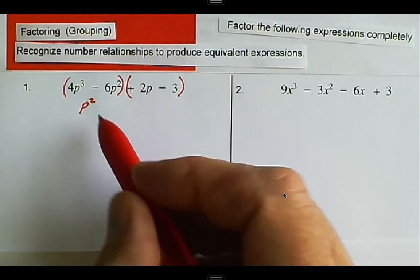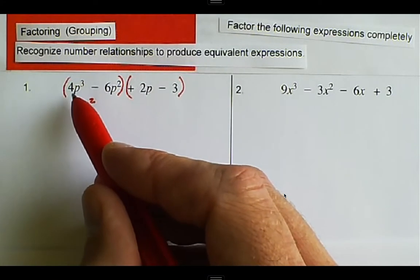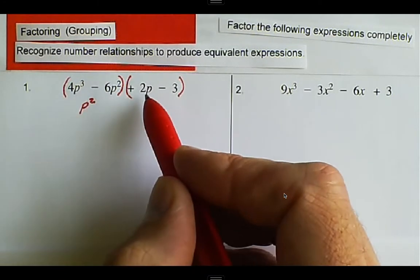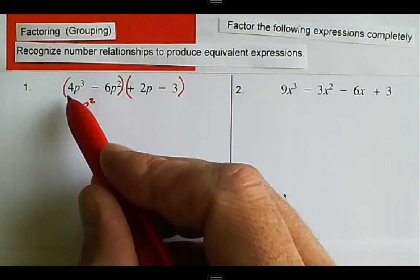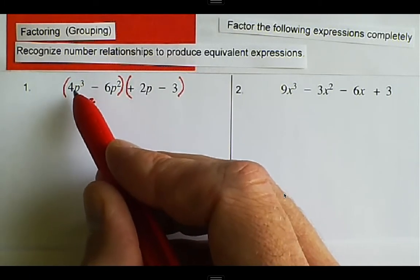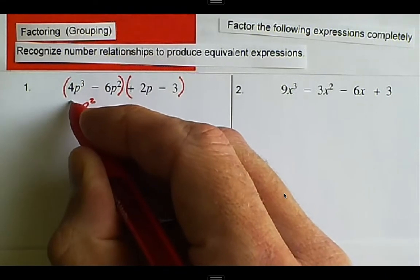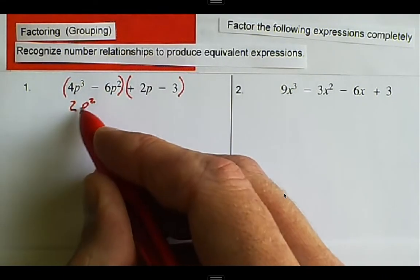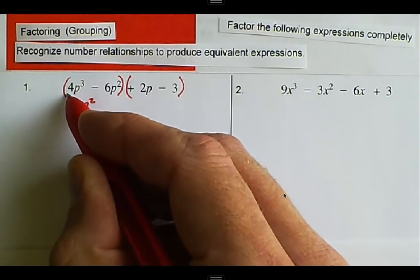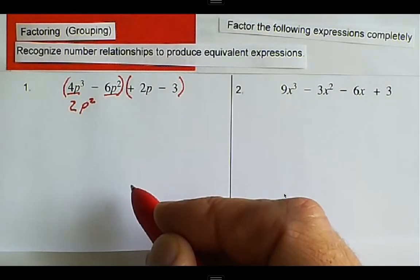The next thing that we look at is we look at the four. We want to make the four look like positive two. What do we have to divide four by in order to make it look like two? We've got to divide by two.